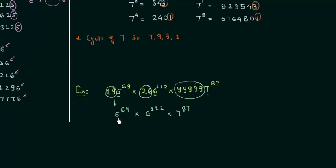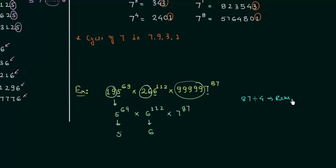For 5 raised to power 69, we always have 5 at the unit place. For 6 raised to power 112, the unit digit is 6. For 7 raised to power 87, we divide 87 by 4, which gives a remainder of 3. We select the third term in the cycle, which is 3. So 7 raised to power 87 will have 3 at the unit place.